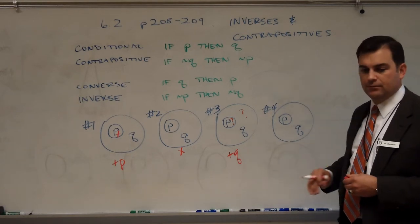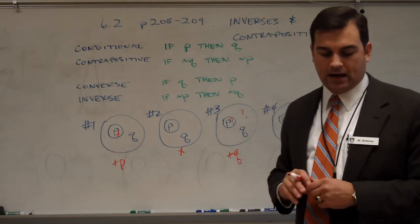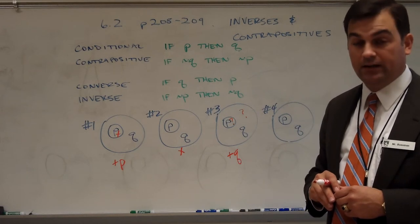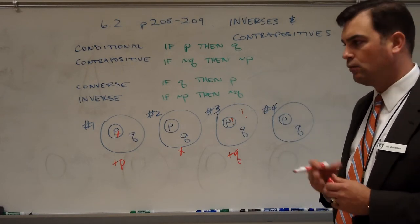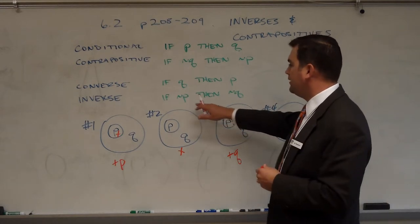In statement number four, it says, all runners are athletes and Larry is not a runner. What conclusion can I draw? Well, that's the inverse. If not a runner, then can I conclude not an athlete?